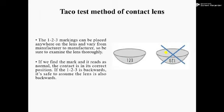If we find the mark and it reads as normal, the contact lens is in its correct position. If the one, two, three appears backwards, it is safe to assume the lens is also backwards. So first we find the mark on the contact lens and observe whether it is in its normal position or backwards.